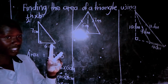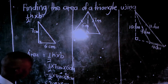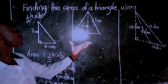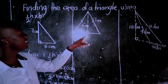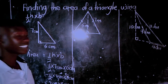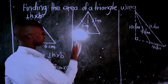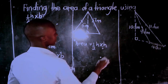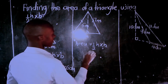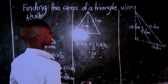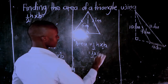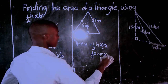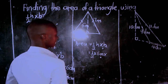That's why area is measured in square units, because we have two units multiplied together — centimeter times centimeter gives centimeter squared. Now for my second triangle, the height is 6 meters and the base is 8 meters. So the area formula is a half of height times base, giving us a half times 6 meters times 8 meters.